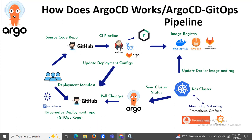Next, the code is shipped to the artifact store and a Docker image is built and pushed to the image registry. The image registries mentioned include Docker Hub, AWS ECR, and GitHub Container Registry. Then the CI pipeline commits and pushes a new version into the deployment repository.